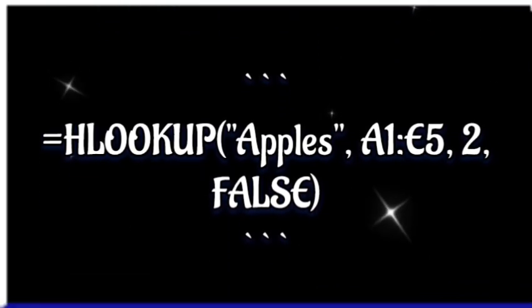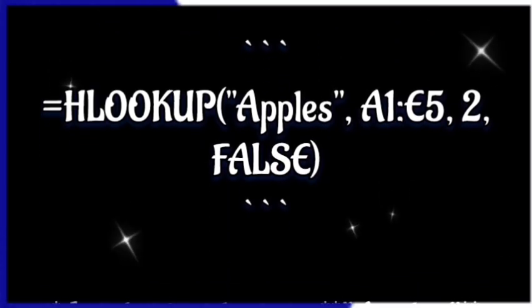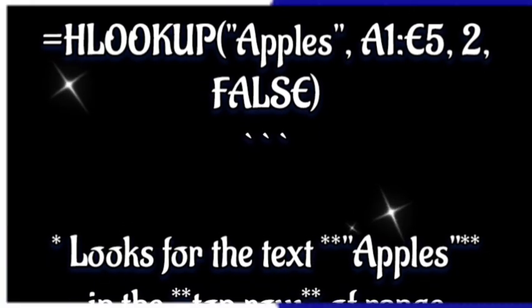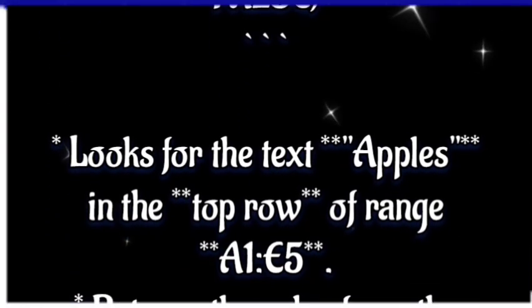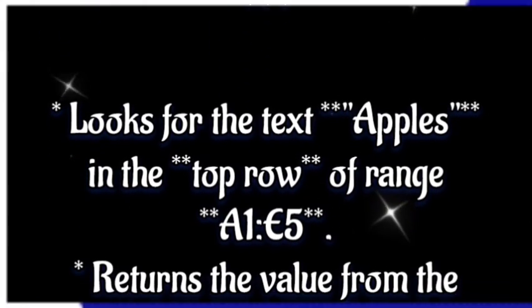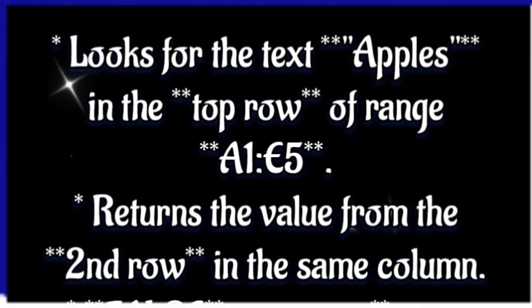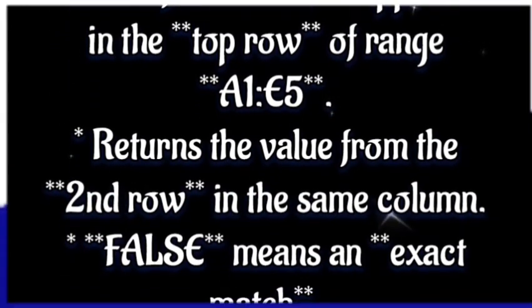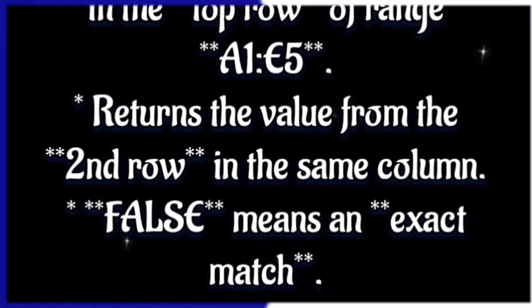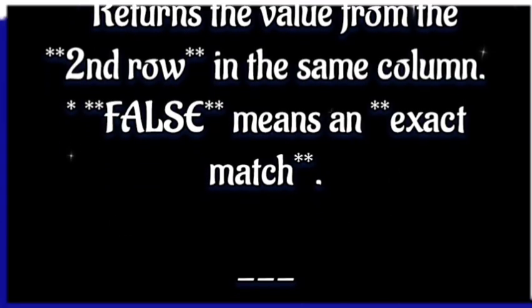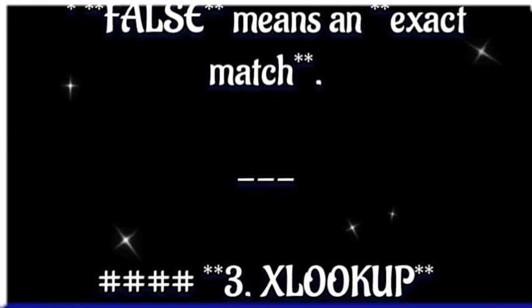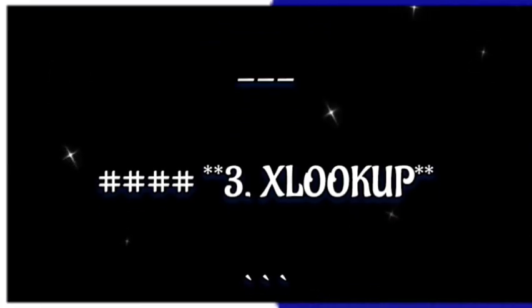Number two: HLOOKUP. HLOOKUP("apples", A1:E5, 2, FALSE) looks for "apples" in the top row of range A1:E5, and returns the value from the second row in the same column. FALSE means an exact match.